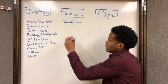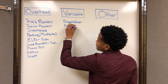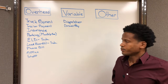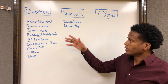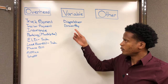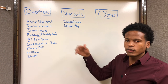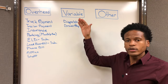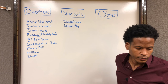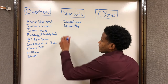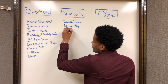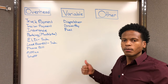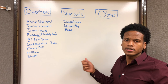The next one is driver pay. If the drivers don't work, they don't get paid — so if you didn't run your truck that month, there would be no pay for the driver. But if you ran really hard and were running all month long, your driver pay is going to be really high because your revenue should be really high as well. The next variable expense is fuel — pretty self-explanatory. The more you run and the harder you run, the more fuel you're going to burn, and the higher the fuel expense will be for that month.